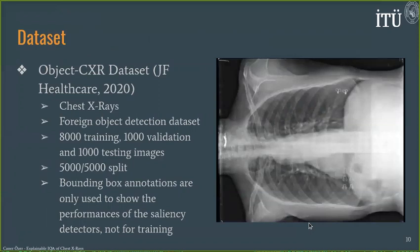We test our approach on the Object-CXR dataset, where the goal is detecting and localizing foreign objects on chest X-rays. There are 8,000 images for training, 1,000 for validation, and 1,000 for testing, with an even split of images that do and do not contain foreign objects. While we only leverage the image-level labels for training the network, we use the bounding box annotations to demonstrate the strength of NormGrad.